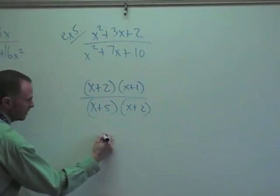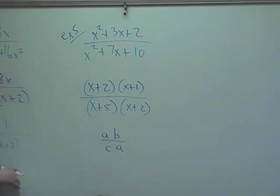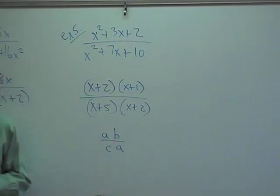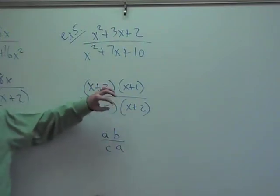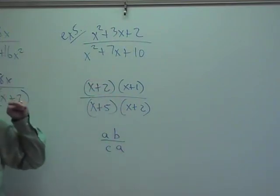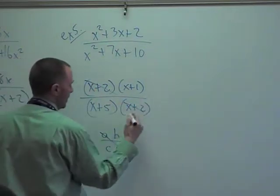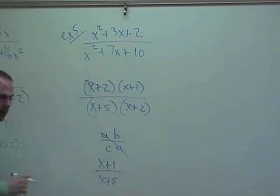Again, this is like a times b over c times a. That's how I set it up. If x plus 2 is a, I can reduce the a's, can't I? There's no plus or minus signs really in here. Remember the parentheses move together as one thing. So this is just going to leave you as x plus 1 over x plus 5.